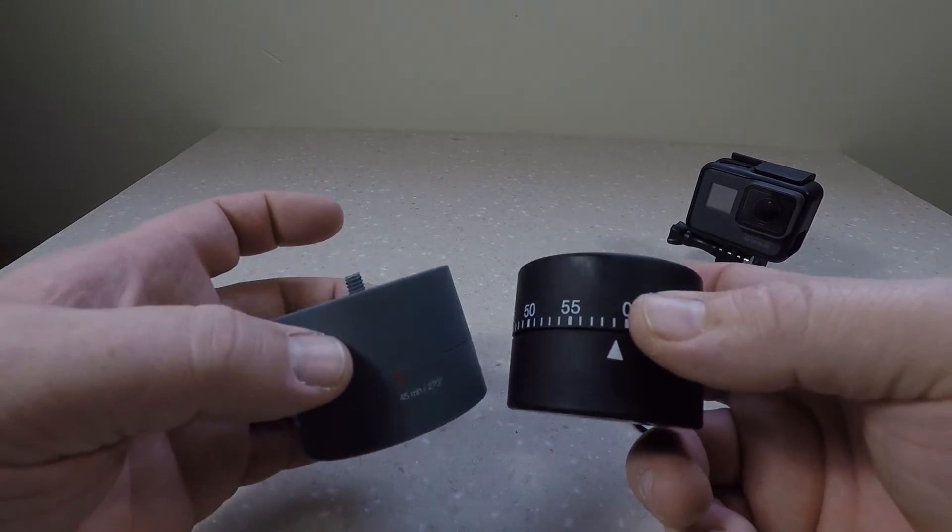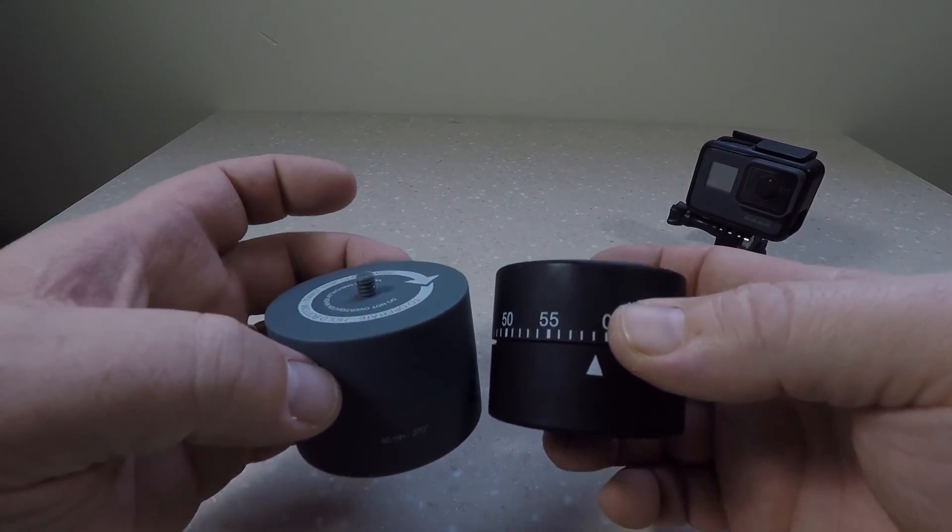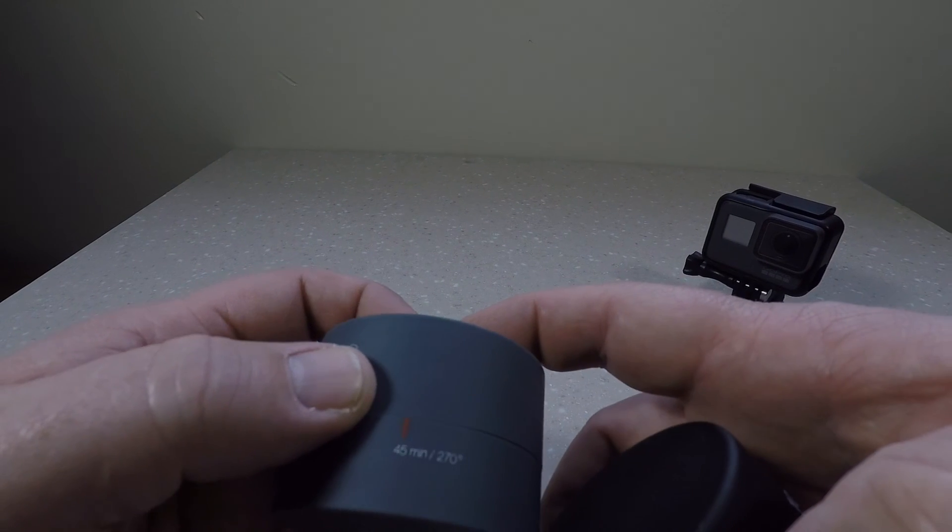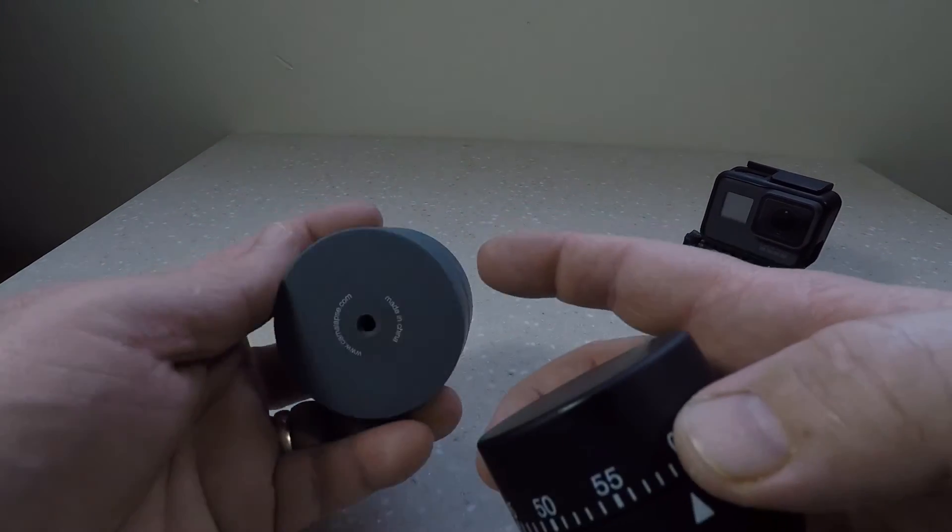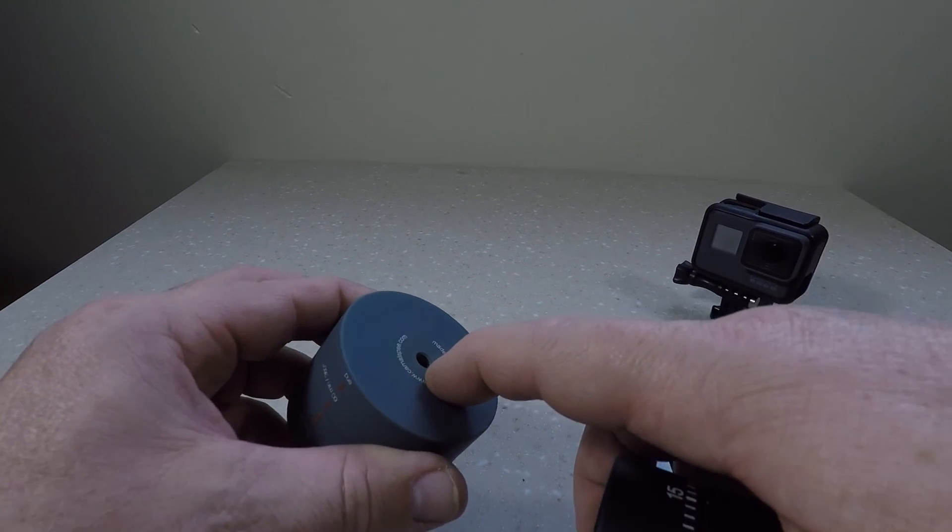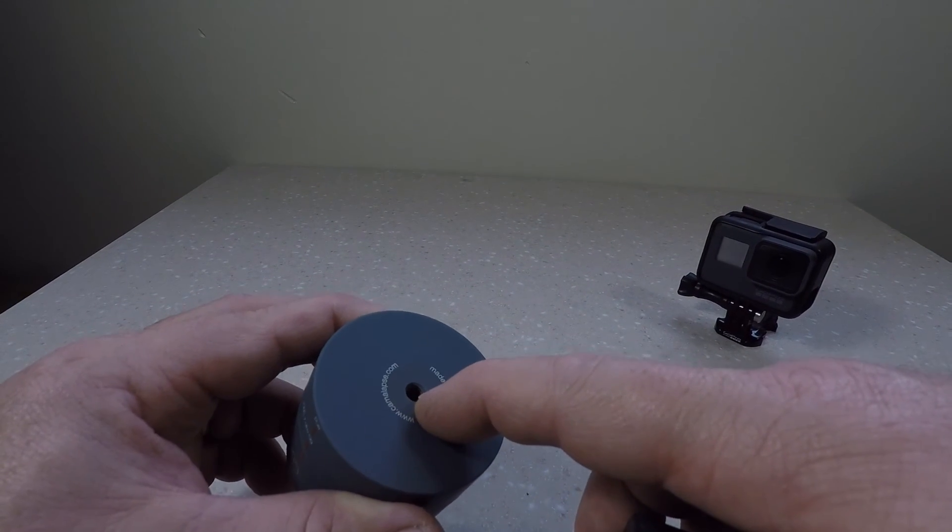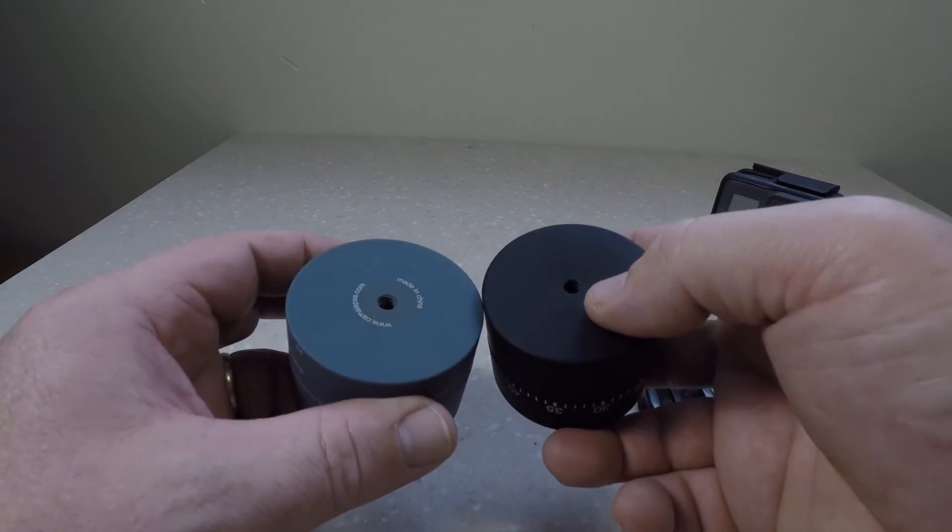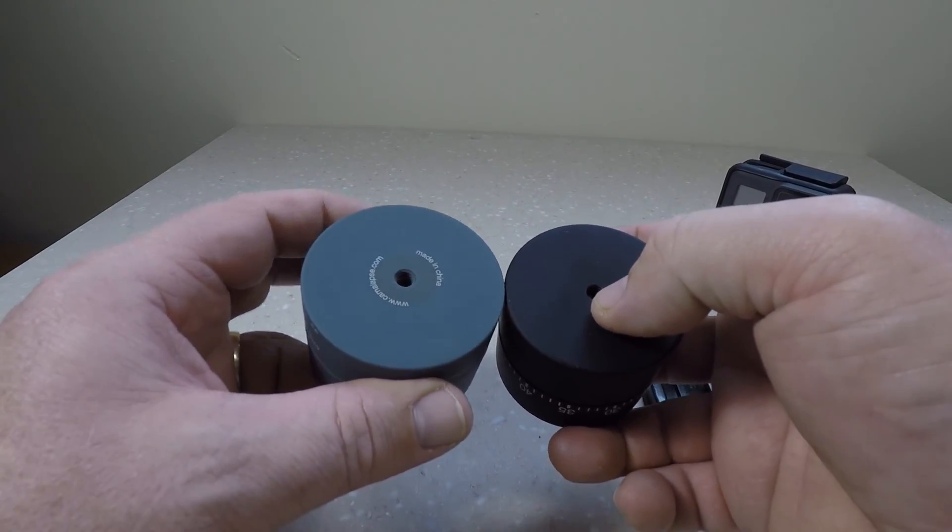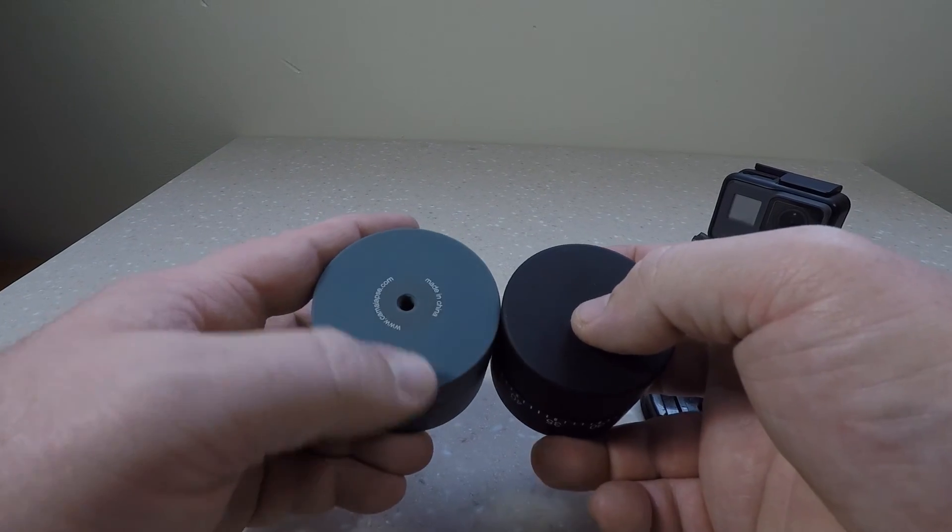And they both do 1 hour 360 degrees. The only thing is the Camelapse has a 1/4-20 on the top and then a female 1/4-20 on the bottom. But this one already has a hole. And I'm going to show you how you can fix that.